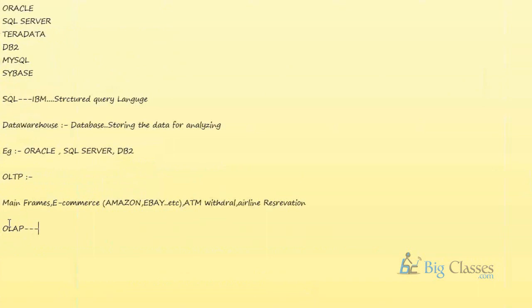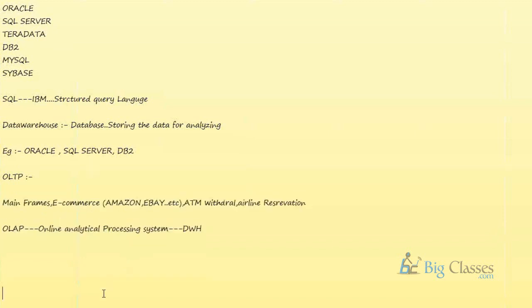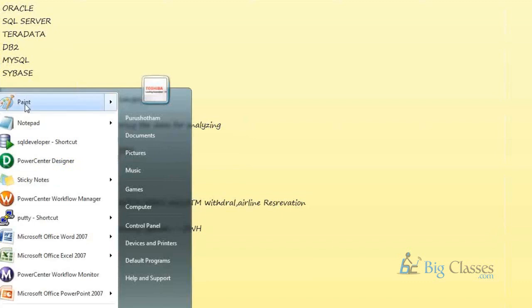The other type of application is called OLAP — Online Analytical Processing System — which is also called a Data Warehouse. OLTP is a system where we receive data from customers; for example, when you book a ticket on an airline reservation system, data gets added to the database. Both OLTP and OLAP systems store data in the form of a database.